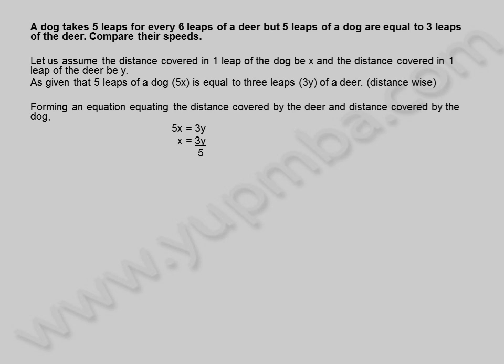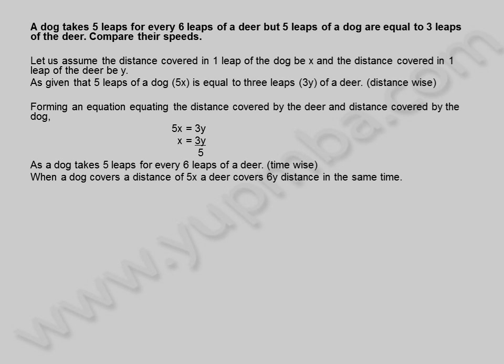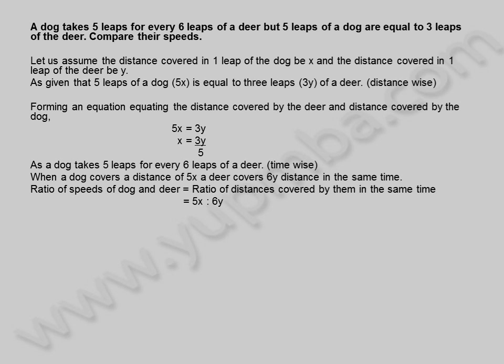So x is equal to 3y by 5. As a dog takes 5 leaps for every 6 leaps of a deer — time wise. When a dog covers a distance of 5x, a deer covers 6y distance in the same time. The ratio of speeds of dog and deer is equal to the ratio of distances covered by them in the same time, which is 5x to 6y.